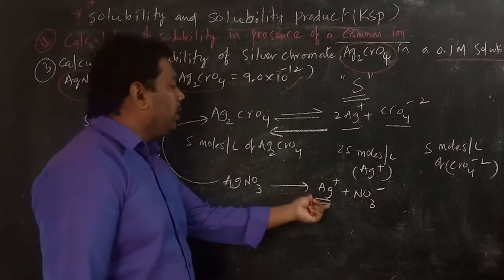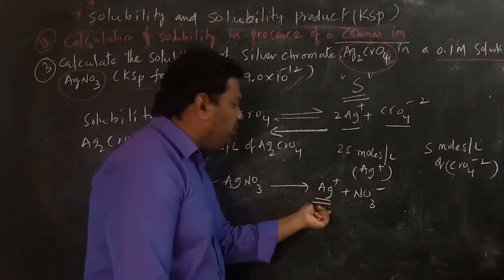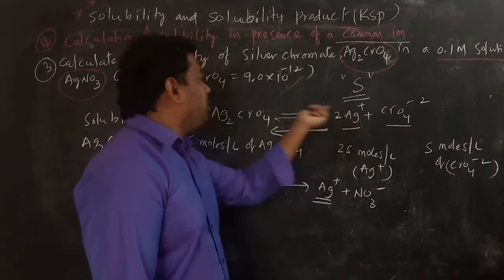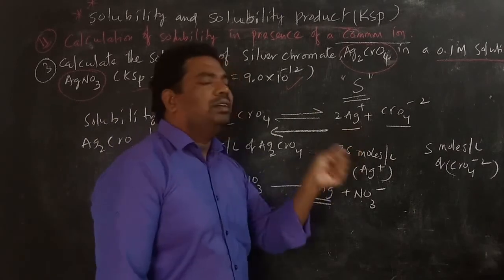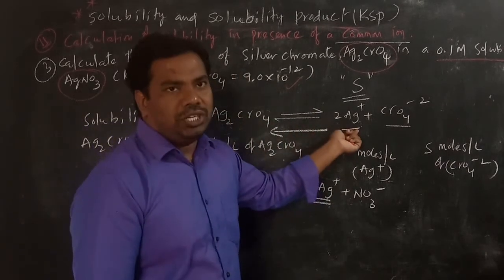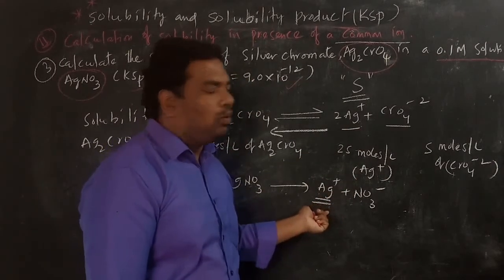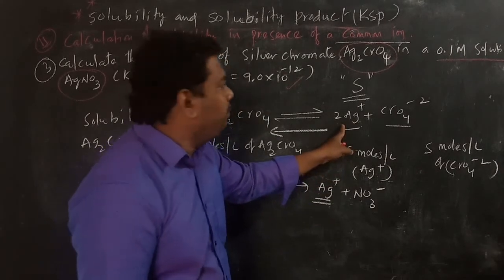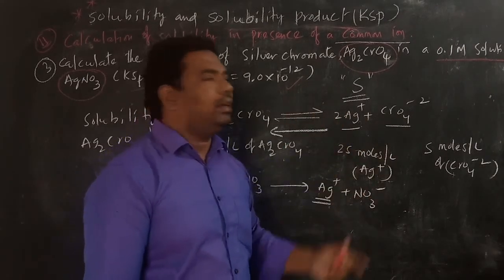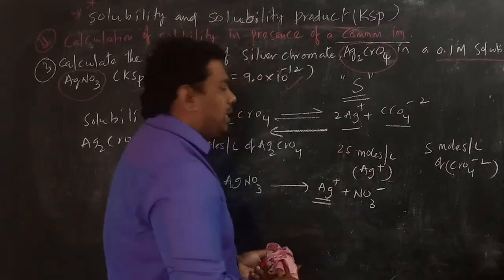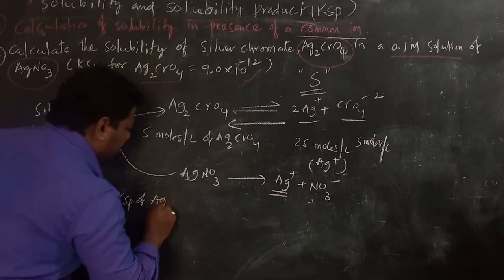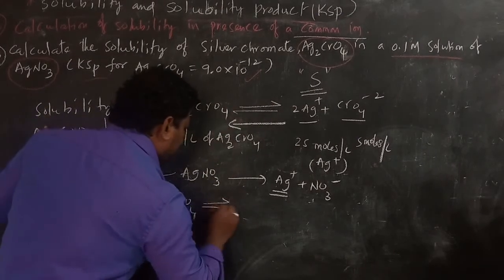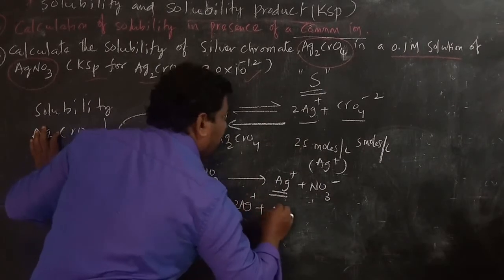Since silver nitrate completely dissociates, the concentration of Ag⁺ from it is much higher than the Ag⁺ contributed by silver chromate. Silver chromate has very small dissociation, so the 2S contribution of Ag⁺ is very small compared to 0.1 molar. Therefore, we can neglect the 2S value. We are adding Ag⁺ ions from 0.1 molar AgNO₃.